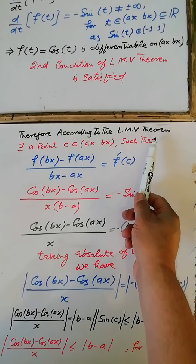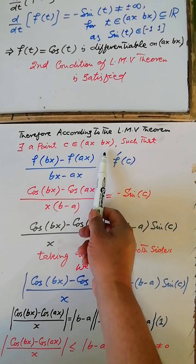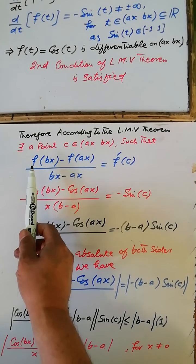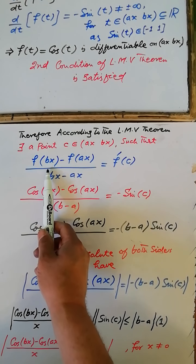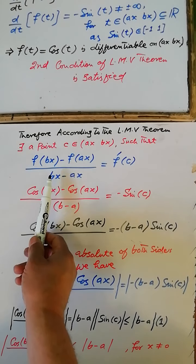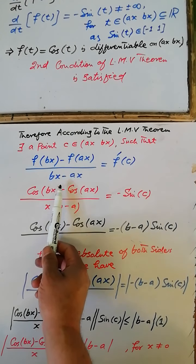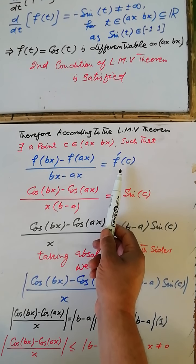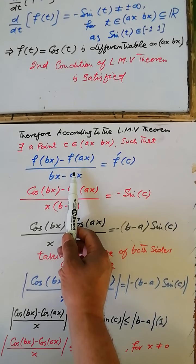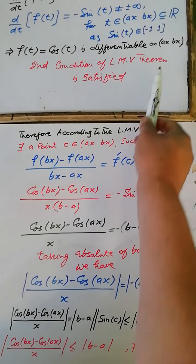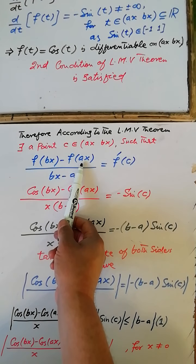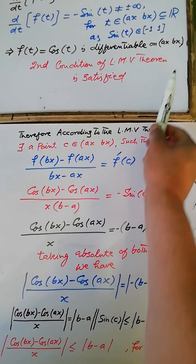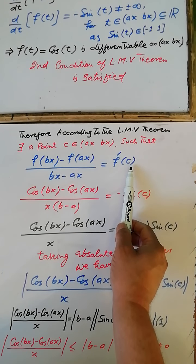Therefore, according to the Lagrange Mean Value theorem, there exists a point C in the open interval whose endpoints are ax and bx such that the slope of the chord passing through the endpoints of the given curve equals the tangent line at point C parallel to that chord. That is, [f(bx) - f(ax)] / (bx - ax) is equal to the derivative of the function at point C.